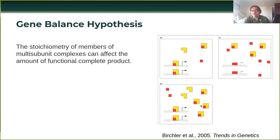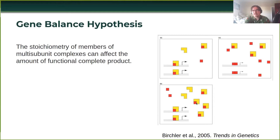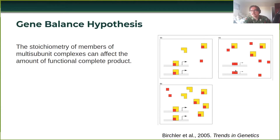In panel B, just below that, you have an increase in the absolute value of yellow and red components, but the relative proportions and stoichiometry remain the same. So we still have proper formation of dimers, we have binding, we have expression. But then in panel C, we have an unequal number of red and yellow components, which doesn't allow for the proper formation of a functional product and affects expression.